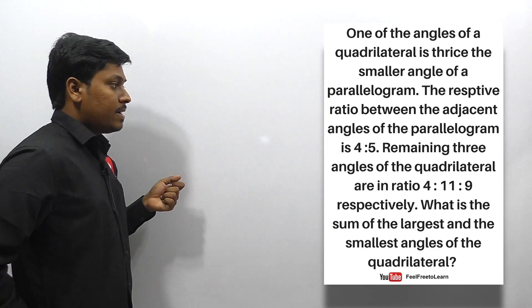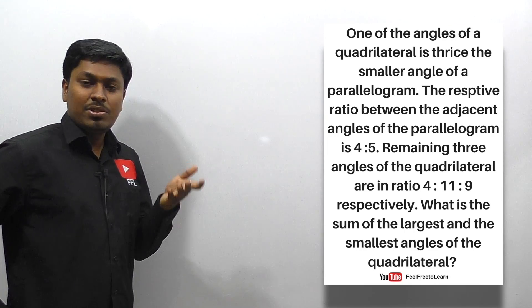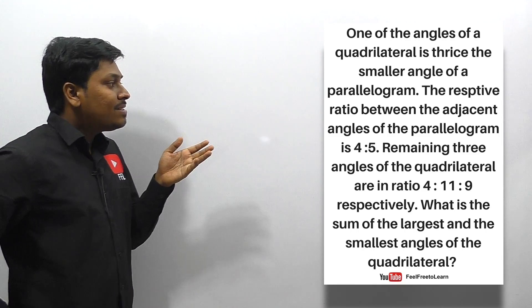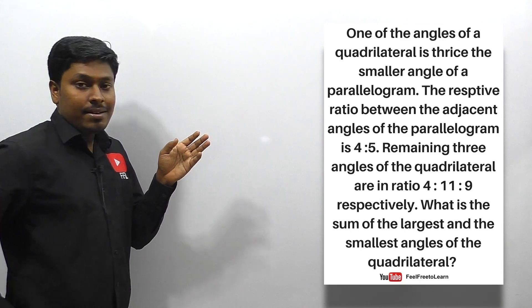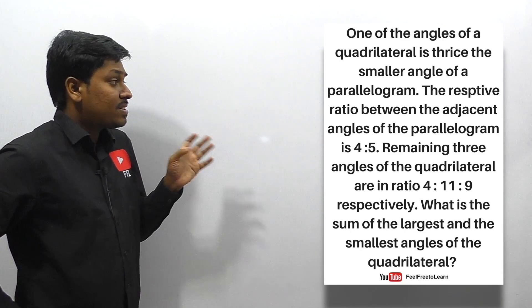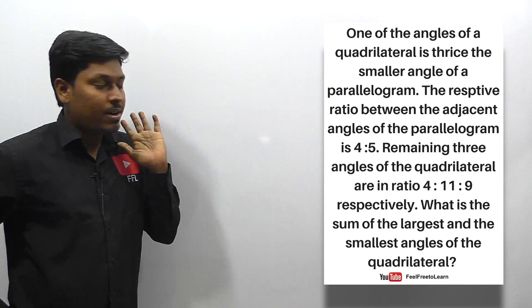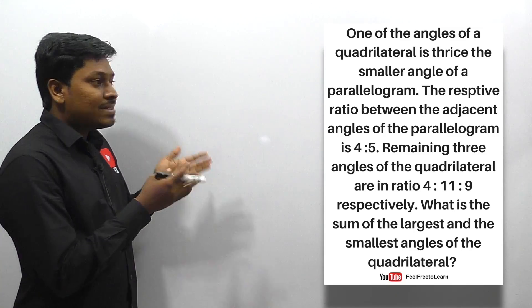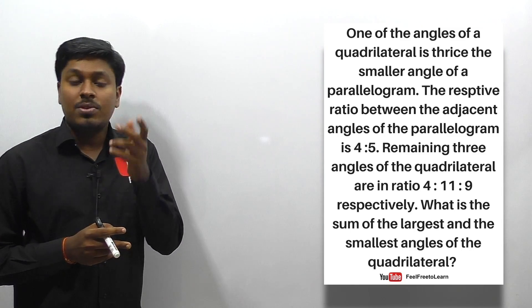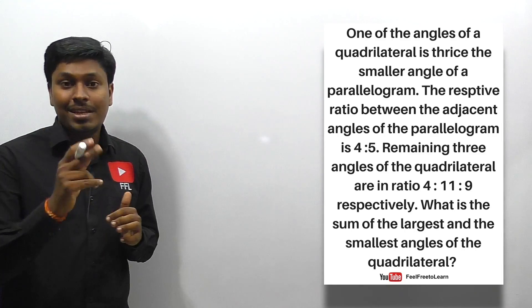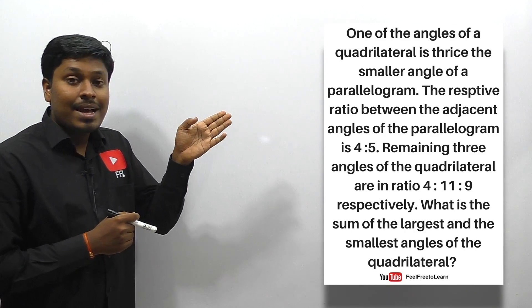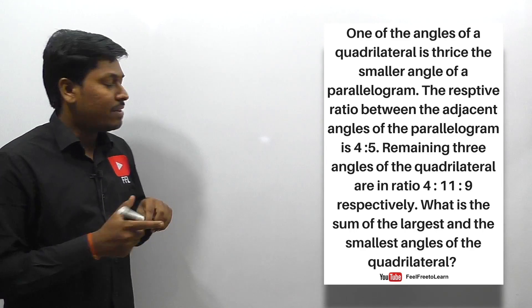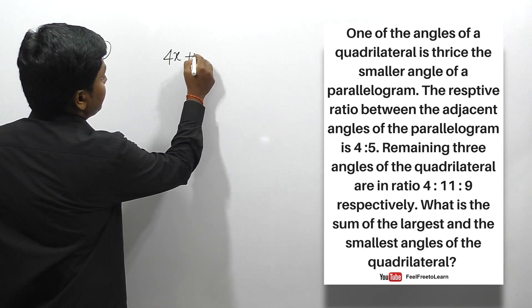We have solved many questions based on quadrilateral and parallelogram. Our first target is to find the smallest angle of a parallelogram. Adjacent angles of a parallelogram sum to 180 degrees, and they are in a ratio 4:5, so we can write 4x plus 5x equals 180 degrees.